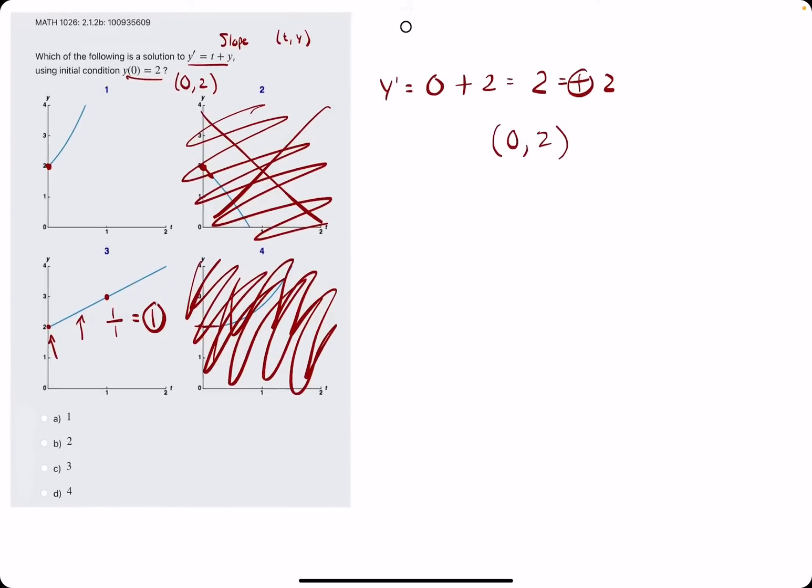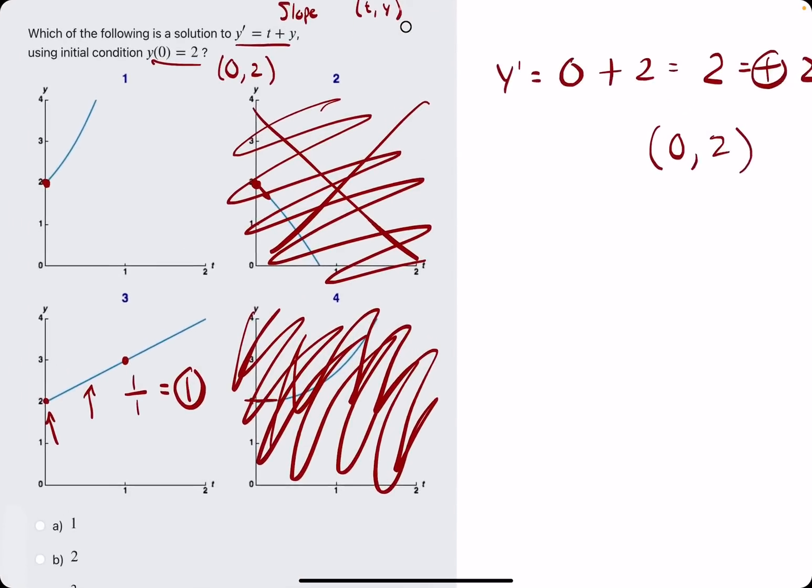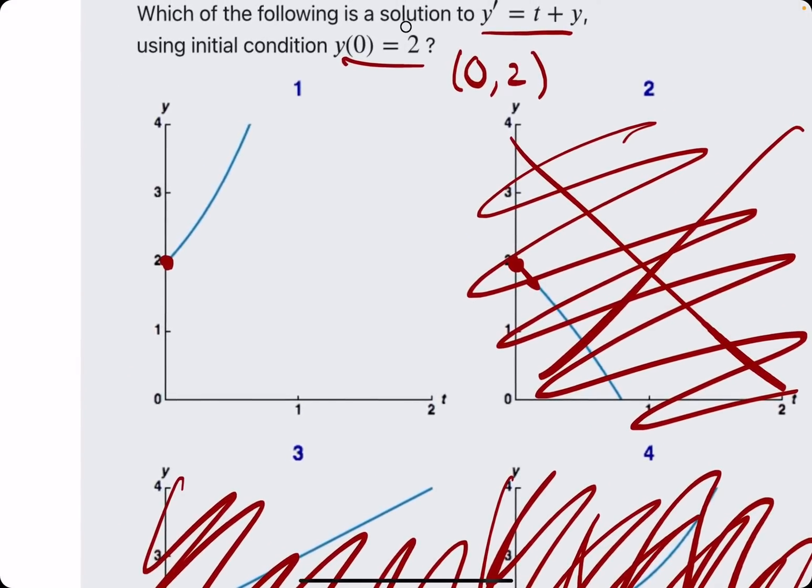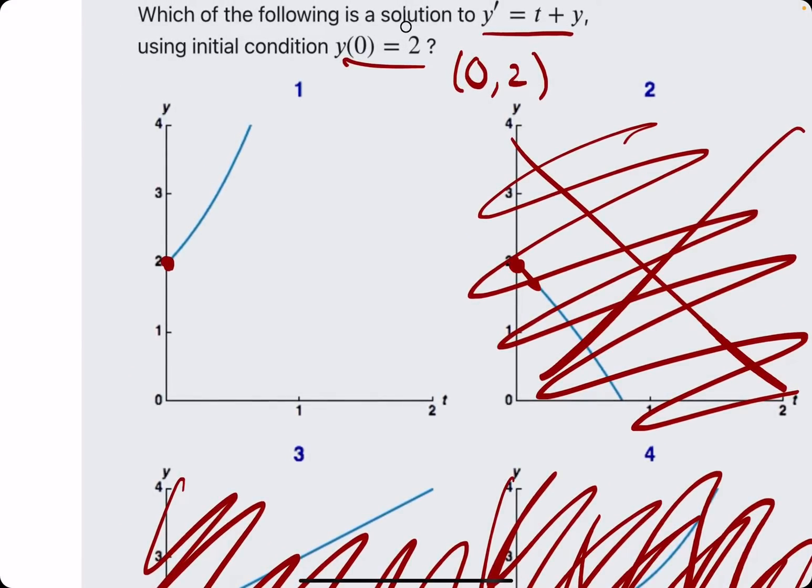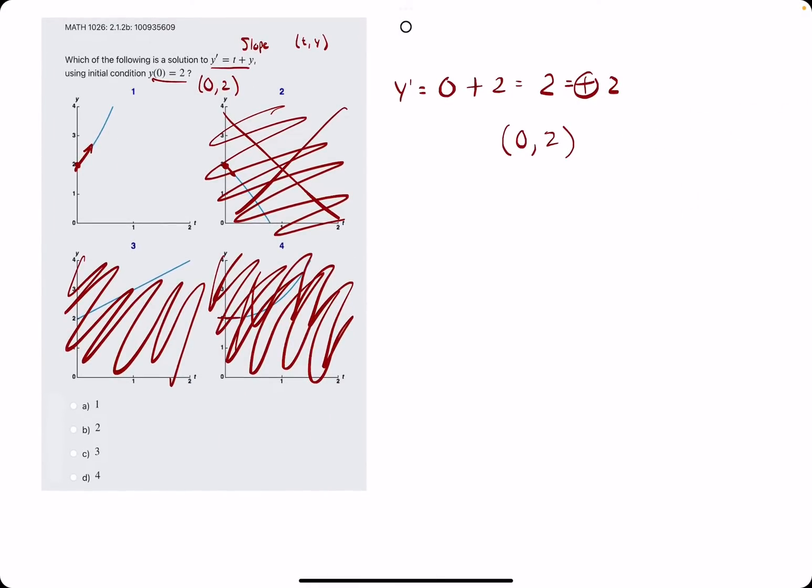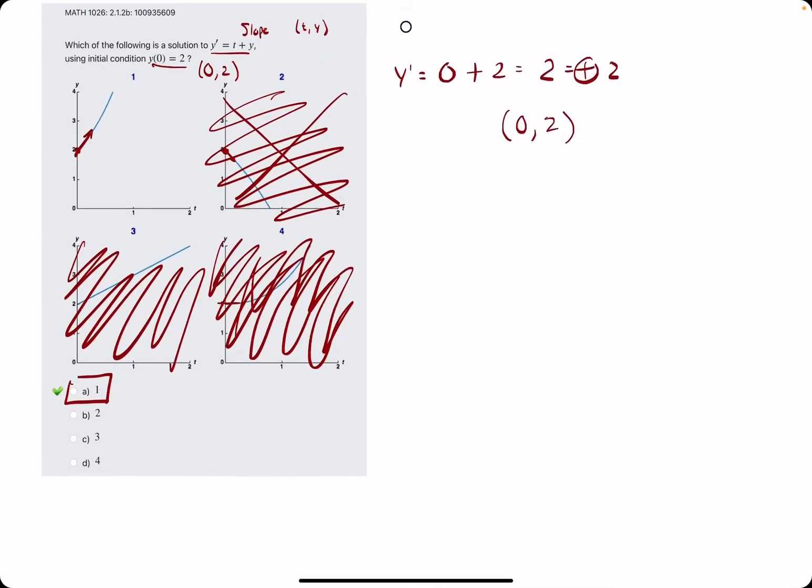But we don't want that. We want the slope to be 2 right at the start. So it kind of solidifies that number 1 should be our answer here because it is a very steep slope, and we know the slope cannot be 1 like it is in 3. So by process of elimination, we see that 1 or a is our answer.